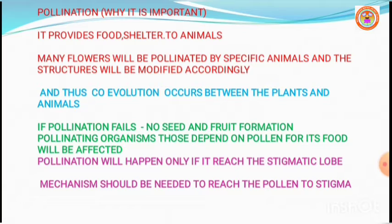Dear students, just imagine: if pollination fails in plants, what will happen? Is it possible to produce fruits and seeds in plants? No. If there is no pollination, there is no fruit and seed formation. If pollination does not occur, the entire world will suffer. There will be no seed, no food formation, and the pollinating organisms which depend on plants and pollen for food will also be affected.